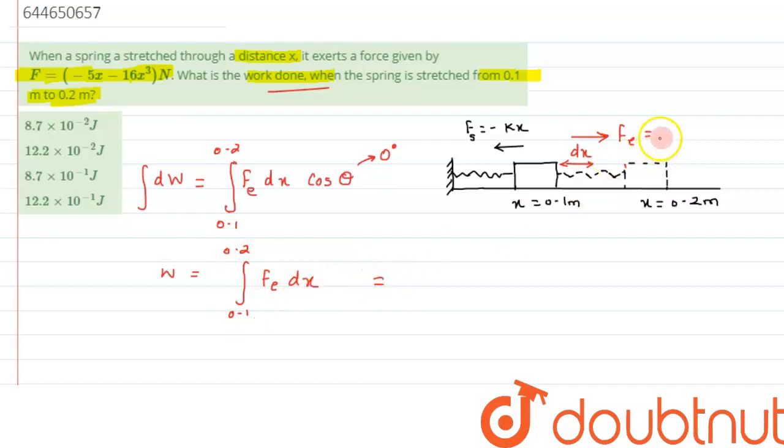And we know F_external will be nothing but if the spring force is minus kx, so F_external would have to be kx. So we will substitute this value.